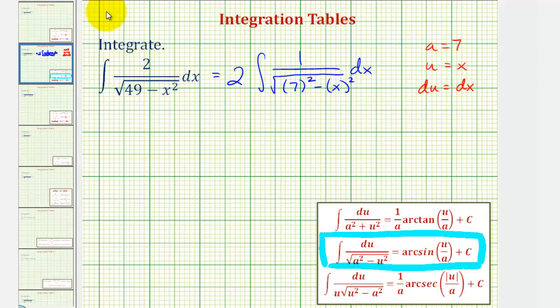So now we'll apply the integration formula. We would have two times arcsine of u divided by a, which would be x divided by seven, plus let's call it c sub one.